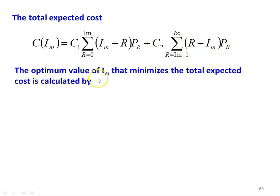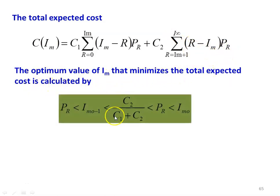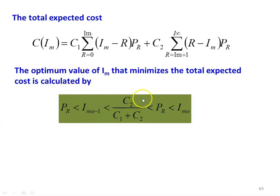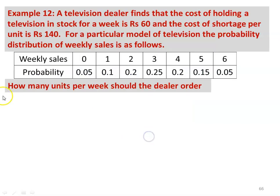The optimum value of I_M that minimizes the total expected cost is found using the condition: P(R < I_M_optimal − 1) < C2/(C1 + C2) < P(R < I_M_optimal). Using this condition, you can find out the optimum stock level.